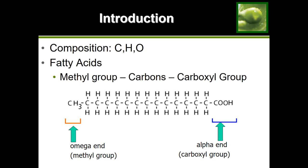Fats are also made of those three atoms, but they have a very different structure. For the building block of fats, we have what we call fatty acids. Fatty acids are composed of first a chain of carbons — a bunch of carbons linked together — and then on one end we have the methyl group, sometimes referred to as the omega end, and on the other side we have the carboxyl group.